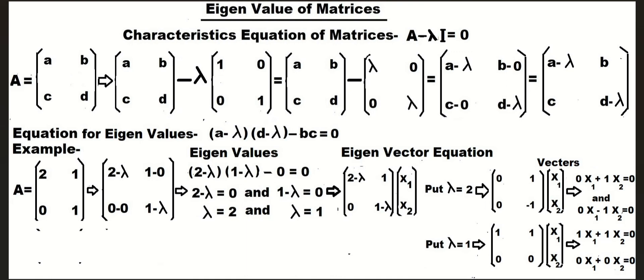And for eigenvalue lambda equal to 1, the vector equations are: 1x1 plus 1x2 equal to 0, and 0x1 plus 0x2 equal to 0.